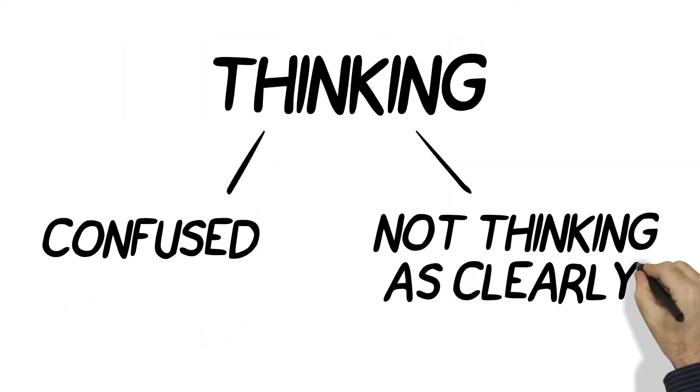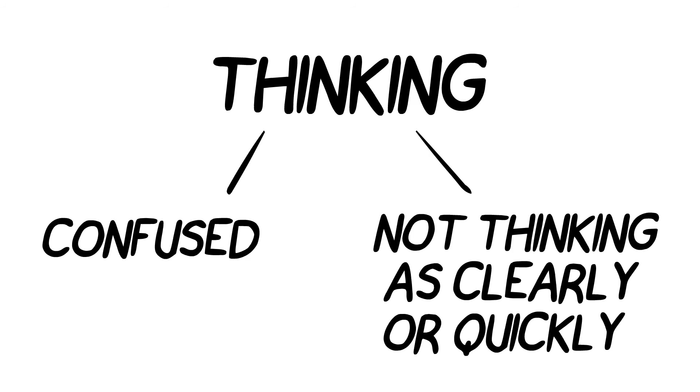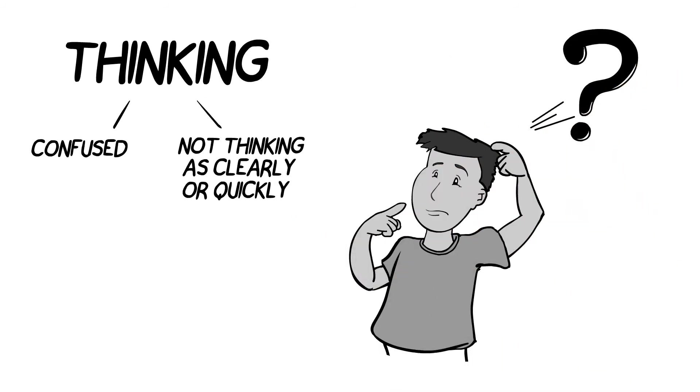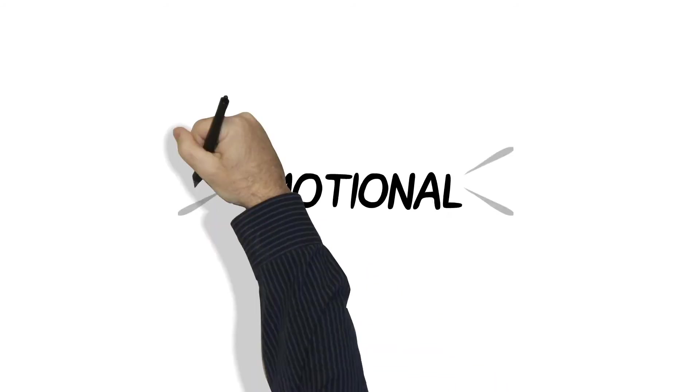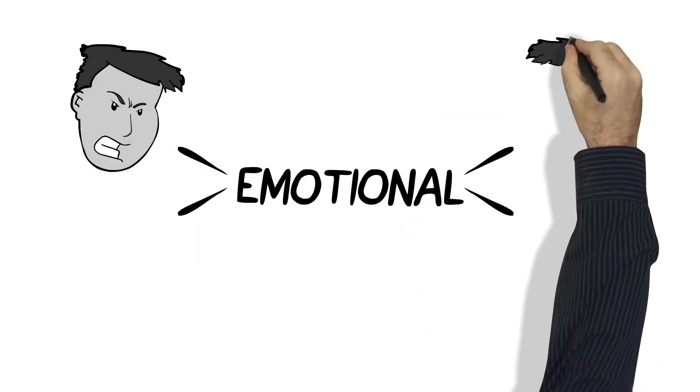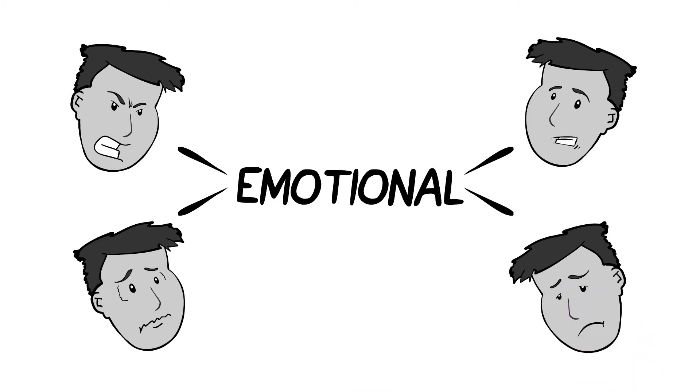The thinking signs and symptoms are things like feeling confused or not thinking as clearly or quickly as usual. It might be hard to concentrate or remember things. Emotional signs and symptoms often include feeling upset or angry easily, feeling nervous, anxious, or really sad.